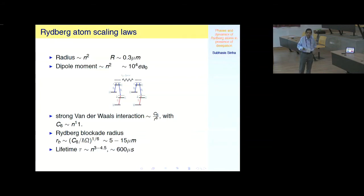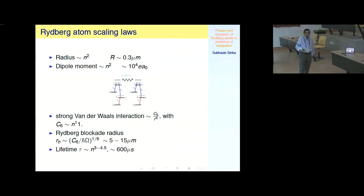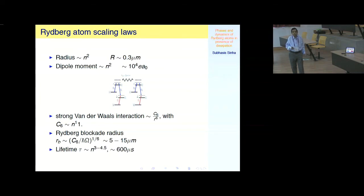The coefficient C6 of this van der Waals-like interaction scales as N to the power 11. This is the main ingredient for synthetically generating correlated material in this case. For typical ultra-cold atomic systems, the problem is that only on-site interactions are generated, making it very difficult to generate long-range interactions. Rydberg atoms are thus a candidate for creating these types of long-range interactions and observing translational symmetry-broken phases.